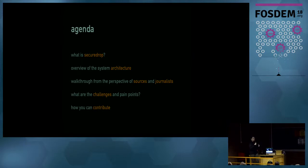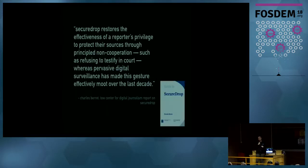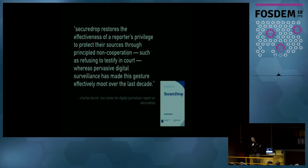Many of the most important stories done via investigative journalism have been possible thanks to anonymous sources and leaked documents — like Watergate, the Snowden disclosures, the Pentagon Papers. The list goes on.